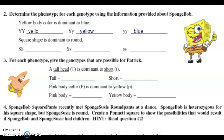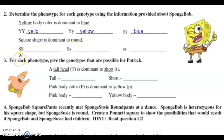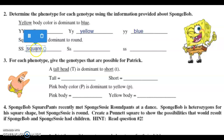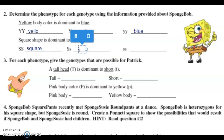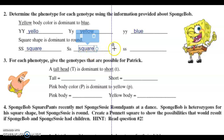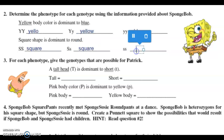Then it says square shape is dominant to round, and they're using S's. So big S represents the dominant square shape, and little s will be recessive round. If it's big S, big S — homozygous dominant — that dominant trait will show, so that will be a square shape. Big S, little s — heterozygous — it has a dominant allele and a recessive allele, but any time that dominant allele is there it covers up the recessive, so it will still show the dominant trait of being square. And little s, little s — homozygous recessive — that is when you will see that recessive trait, so this one would be round.